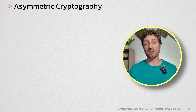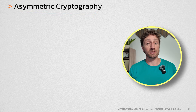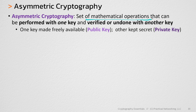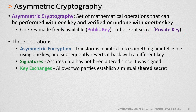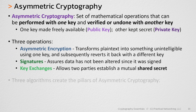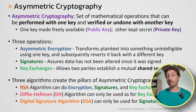For the last 8 lessons in this series, we've been discussing asymmetric cryptography. We started by defining asymmetric cryptography as a set of mathematical operations that can be performed with one key and verified or undone with another key. One of those keys is generally made public and the other one is kept private. We then discussed the three different operations that exist within asymmetric cryptography: asymmetric encryption, signatures, and key exchanges. And finally, we discussed the three algorithms you can use to do one or more of these operations: RSA, Diffie-Hellman, and DSA.